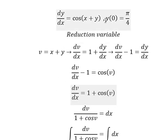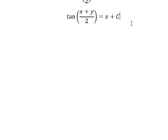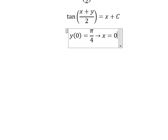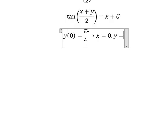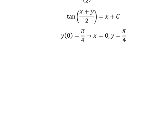Now we have the conditions. That means when x equals to number 0, y equals to π over 4. So we put the value in here to find the value of C.